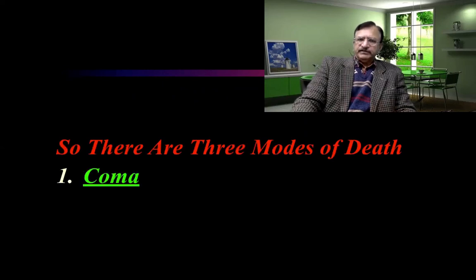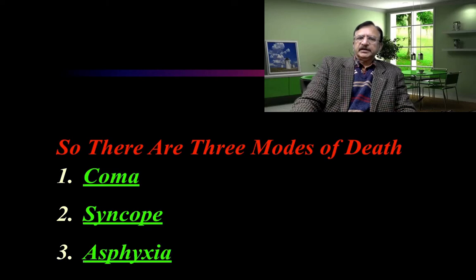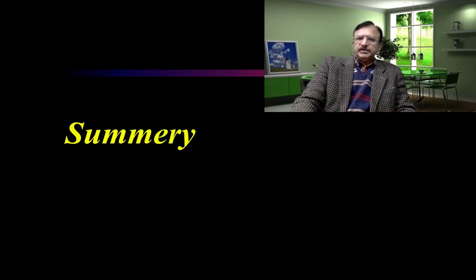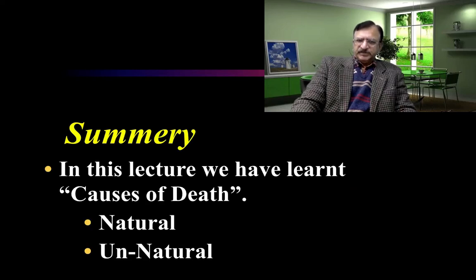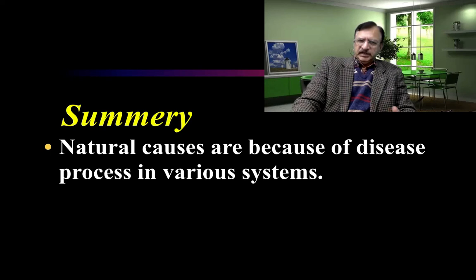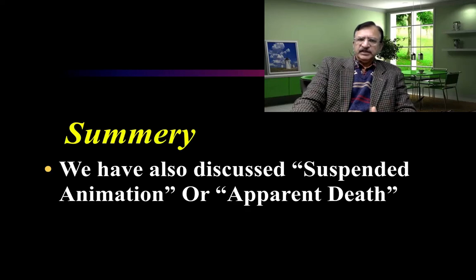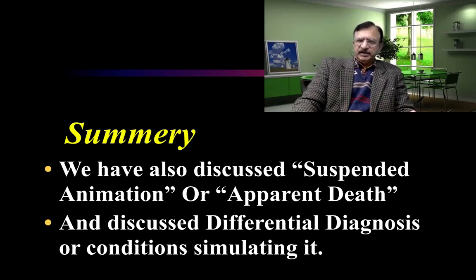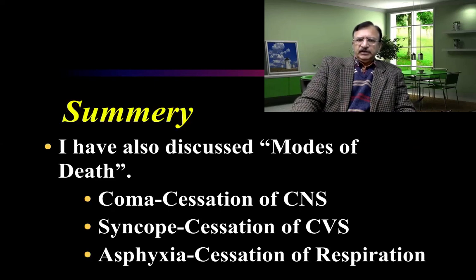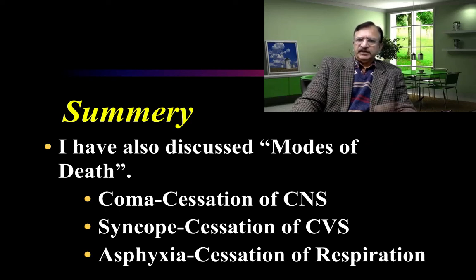So there are basically three modes of death: coma, syncope, and asphyxia. The summary of this lecture is that we have discussed the causes of death, which are natural and unnatural. Natural causes are due to disease processes in various systems, and unnatural may be due to suicidal, homicidal, accidental, or poisoning causes. We have also learned about suspended animation or apparent death and the differential diagnosis of conditions which simulate it. And we have learned the three modes of death — coma, syncope, and asphyxia — because of cessation of the central nervous system, cardiovascular system, and respiration respectively.